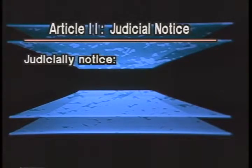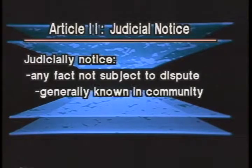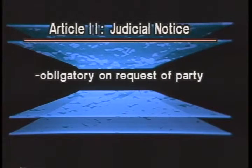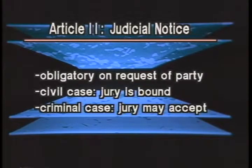Article 2 is a one-rule article saying you take judicial notice of things not subject to dispute—not because you personally know them, but because they are generally known in the community or capable of ready ascertainment from reliable sources. You can do it on your own; you must do it at the request of a party if the party gives you the basis. In a civil jury case, you tell the jury they are bound by it; in a criminal jury case, you tell them they may accept it but are not bound.